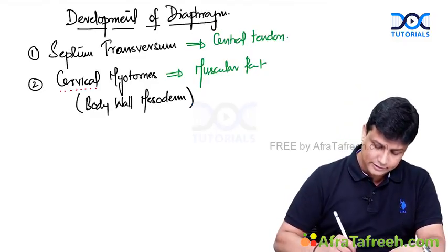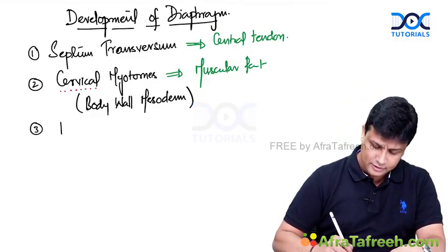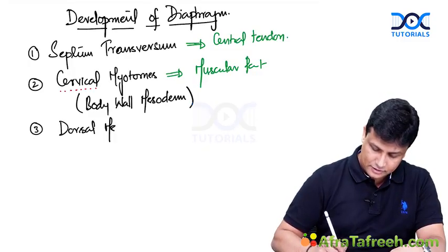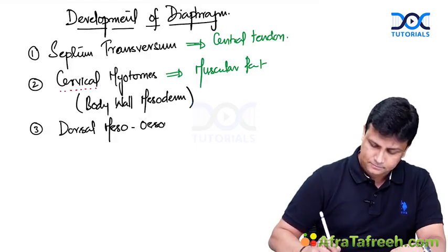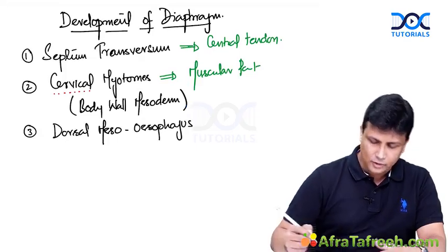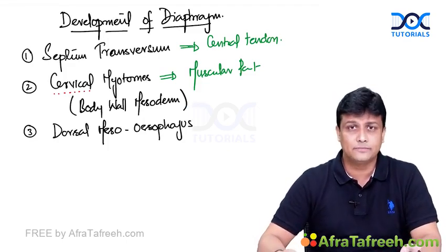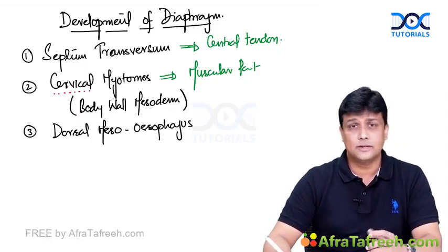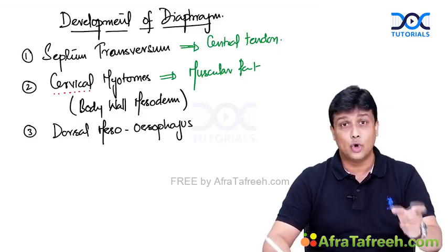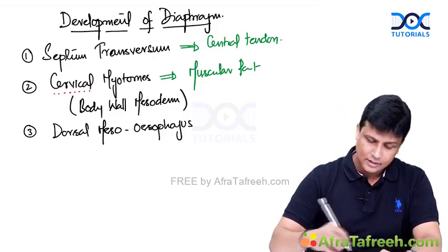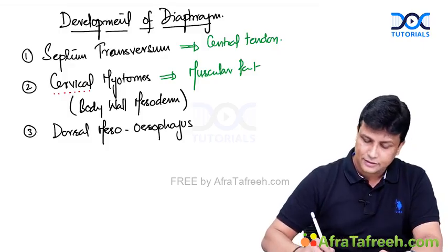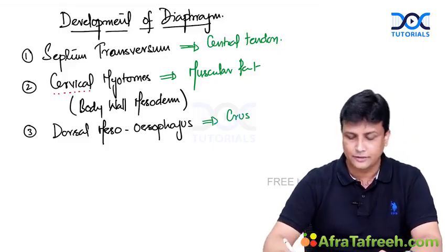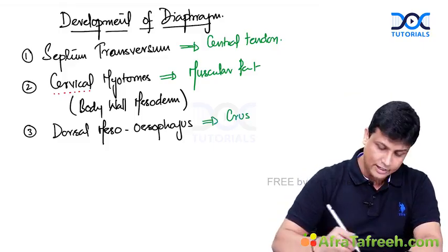Welcome to the third one: the dorsal mesoesophagus. What is this dorsal mesoesophagus? It is nothing but the mesentery of the esophagus — sometimes also written as the dorsal mesentery of esophagus, one and the same thing. The dorsal mesentery of the esophagus is the one which is going to form the crura — the right and left crura of the diaphragm — derived from the dorsal mesoesophagus.